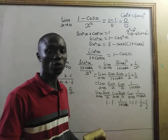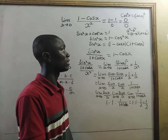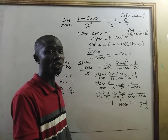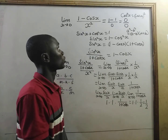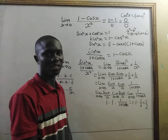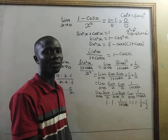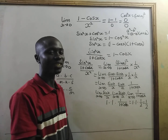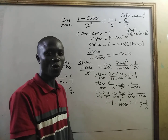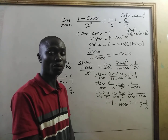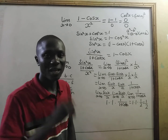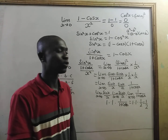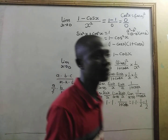Thank you for watching. We can use a different approach to simplify 1 minus cosine of x, but for now, this is what I've done. If you have any other solution, leave it in the comment section. Remember to like, share, subscribe and leave your comments. Bye-bye. Thank you.